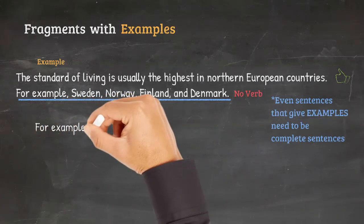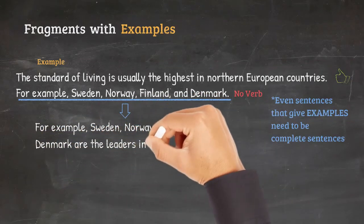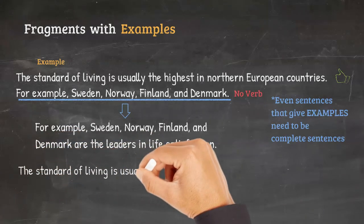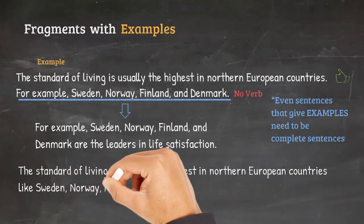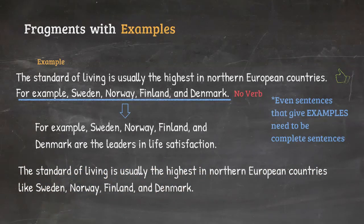The corrected version would be: 'For example, Sweden, Norway, Finland, and Denmark are the leaders in life satisfaction.' We can even fix this mistake by making everything into one long sentence — for instance: 'The standard of living is usually the highest in northern European countries like Sweden, Norway, Finland, and Denmark.' In this case, however, we would need to delete 'for example' or 'for instance.'